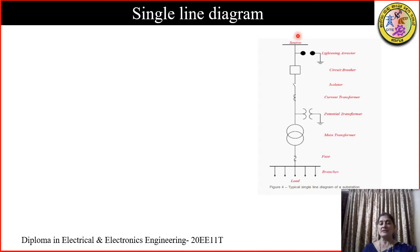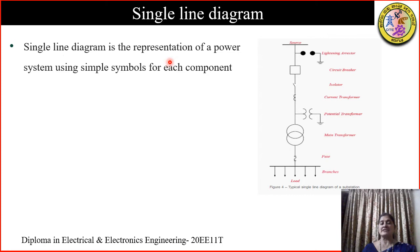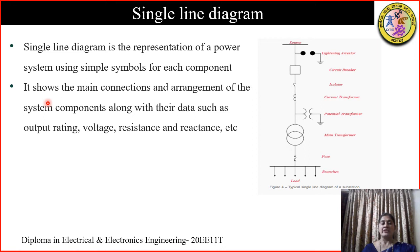Between the source and the load, we have many components in the substation. All the substation components cannot be represented by a figure, so we use graphical symbols to represent various components. To draw a line diagram, you need to know all the symbols of all the components used in a substation. A single line diagram is basically a representation of the power system using simple symbols for each component.